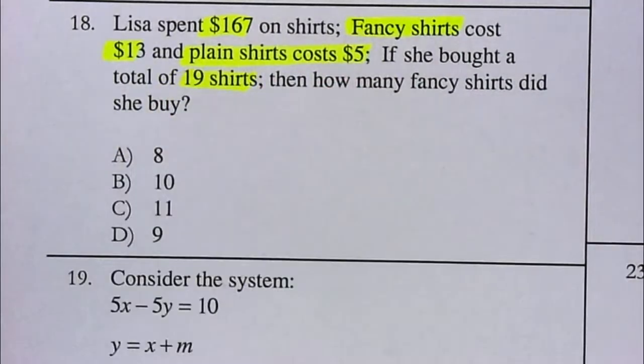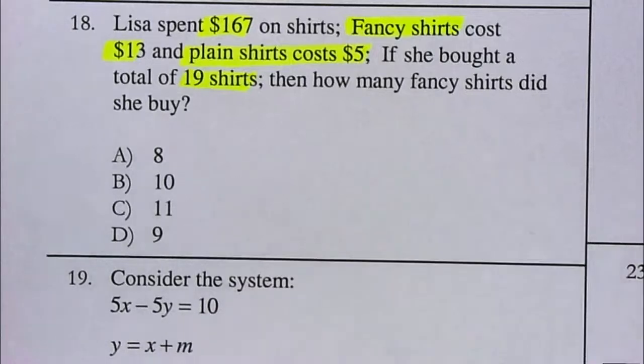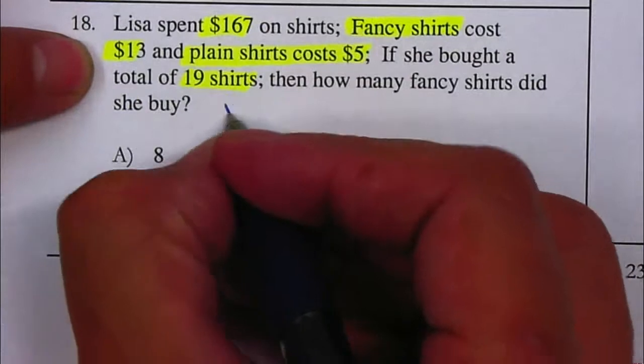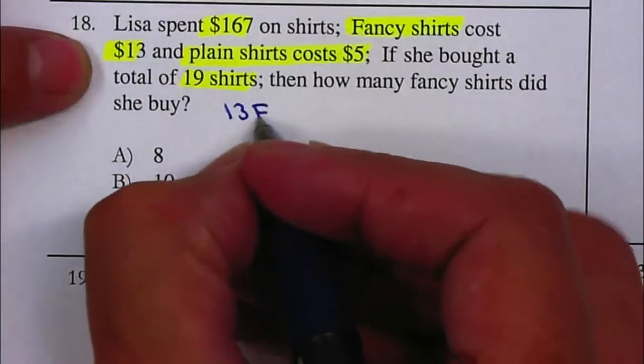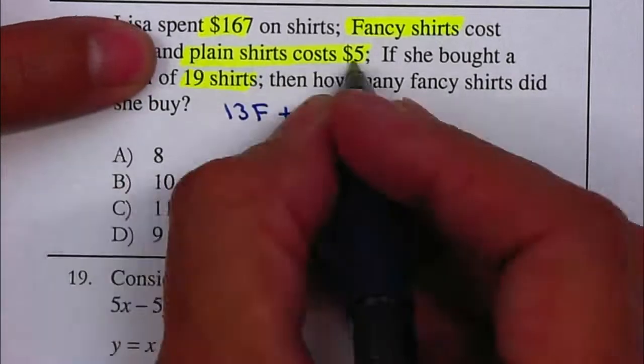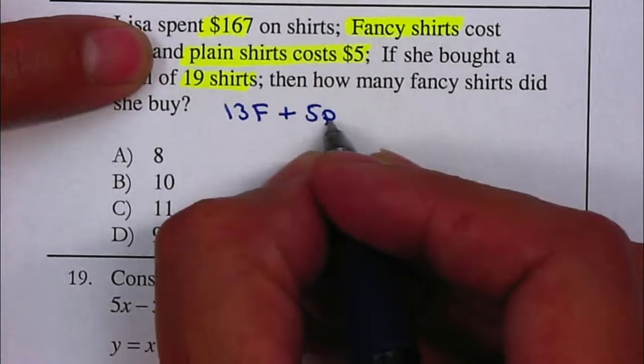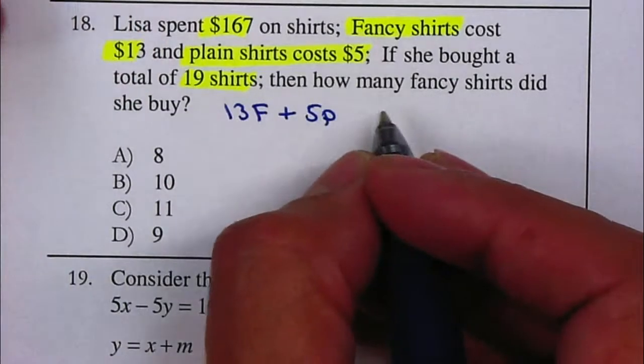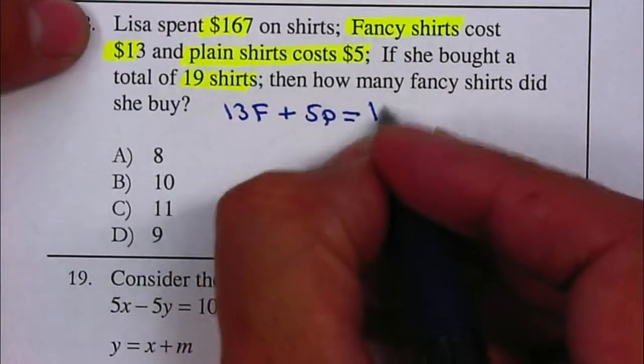Your first equation will have to do with the amount of money, how much money we're spending. Fancy shirts are $13, so this will be 13F for every fancy shirt. Plus, plain shirts are $5, so it will be 5P for every plain shirt. This equals how much money you spend total: $167.